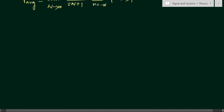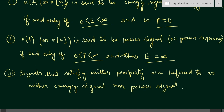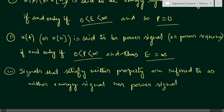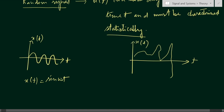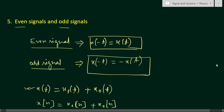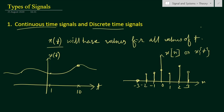For an energy signal, energy must be finite and power equals zero. For a power signal, power is finite and energy is infinite. If neither condition is satisfied, the signal is called neither an energy signal nor a power signal. In this tutorial, seven different classifications of signals have been discussed. If you want a detailed explanation of any type, write it in the comment section. Thank you for watching — please like, share, and subscribe.